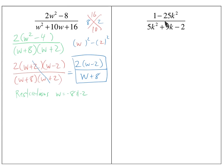In order to simplify this, we're going to have to factor the top and the bottom. On the top, you should see a GCF of negative 1. On the bottom, there is no GCF. When I pull out a GCF of negative 1 from the top, that becomes negative 1 times (25k² - 1). But this can still factor — do you see a difference of squares? That's (5k)² and 1², so this piece factors as (5k + 1)(5k - 1).